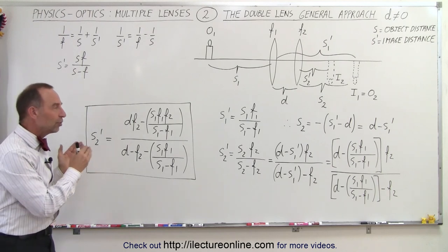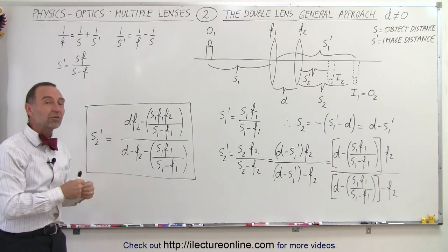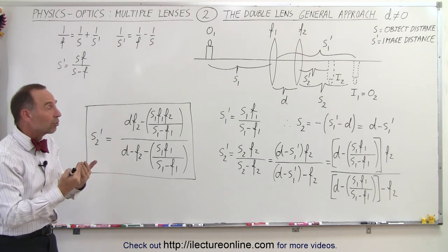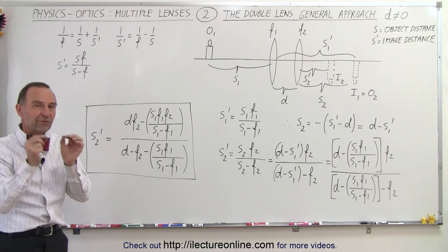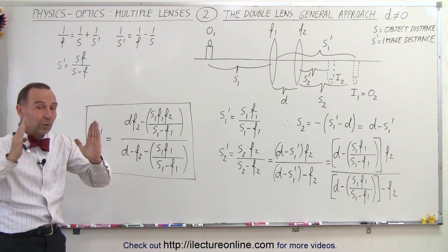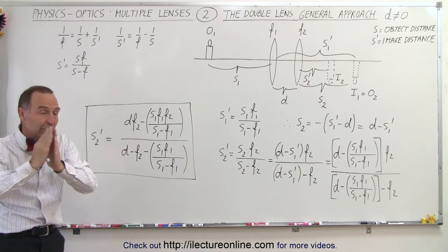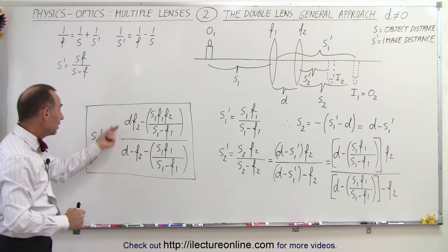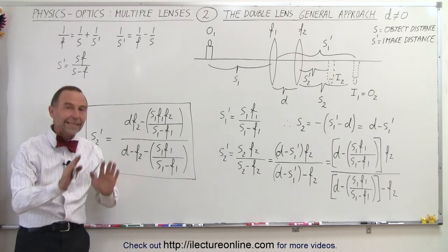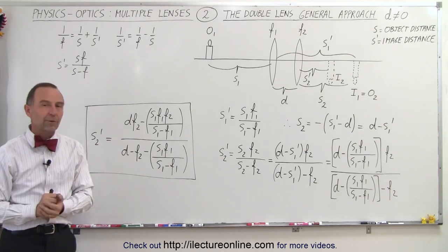We're going to use this equation to derive a general equation for the focal length of a double lens when the two lenses are together — when d goes to 0. We'll do that in the following videos.